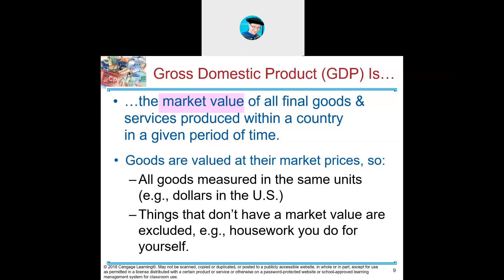Things that don't have a market value include the work that you do for yourself — you can't put a market value on that work. The work we do individually for ourselves is unique. For example, if I change a light bulb at my house and someone else changes one at their house, we might have different hourly rates, different light bulbs, different techniques — therefore the market value can't be the same.